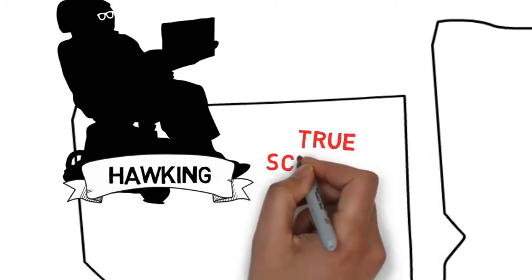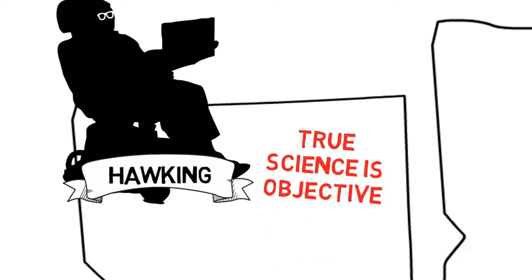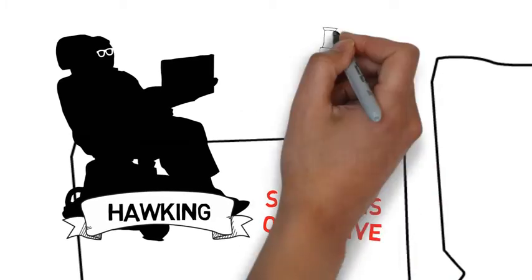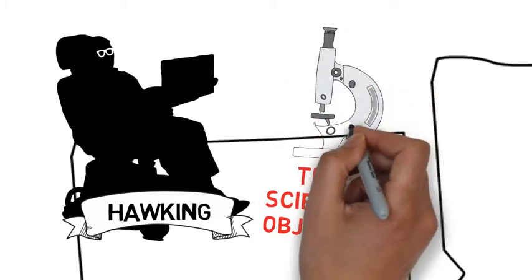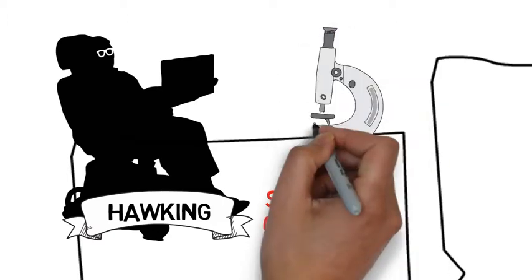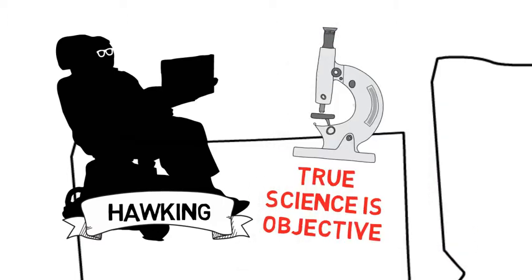Well, true science is about discovering truth. Its objective is to understand the universe without human biases. And something Hawking said about gravity just doesn't fit with reality.